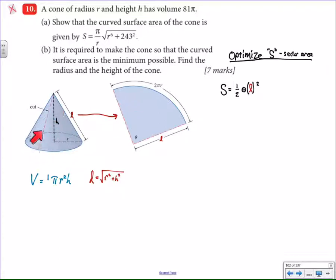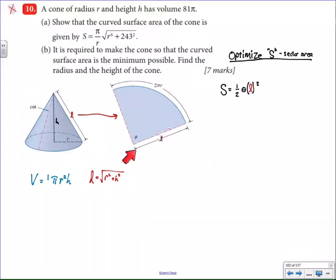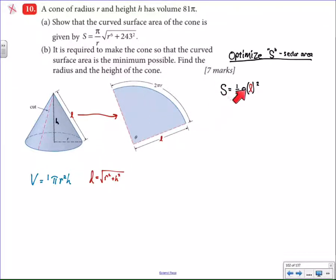If we unraveled the top of the cone, it would look like this particular sector right here. Therefore, we have a connection between the radius and height of the cone to its slant height. That slant height becomes the radius of this particular sector. What I'm trying to optimize then is the area of this particular sector, which is usually (1/2)πr², but in this case r is the slant height of the cone.